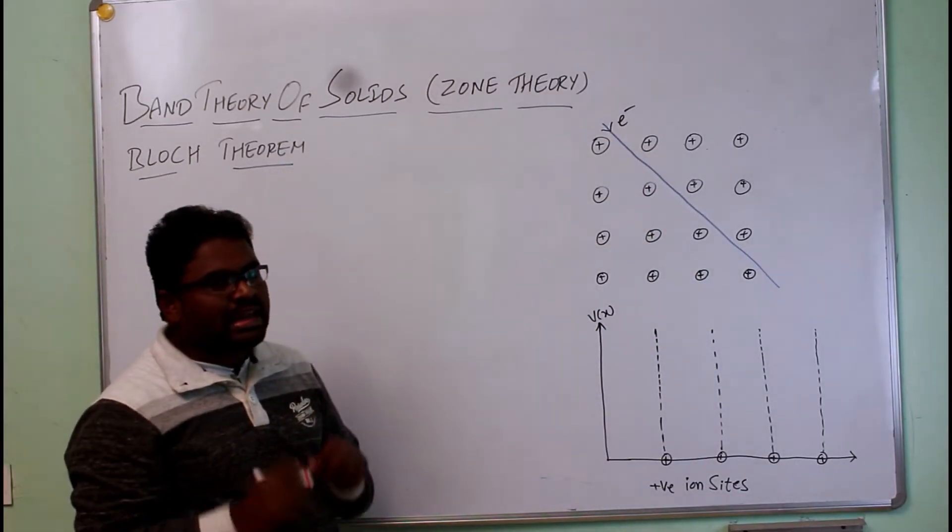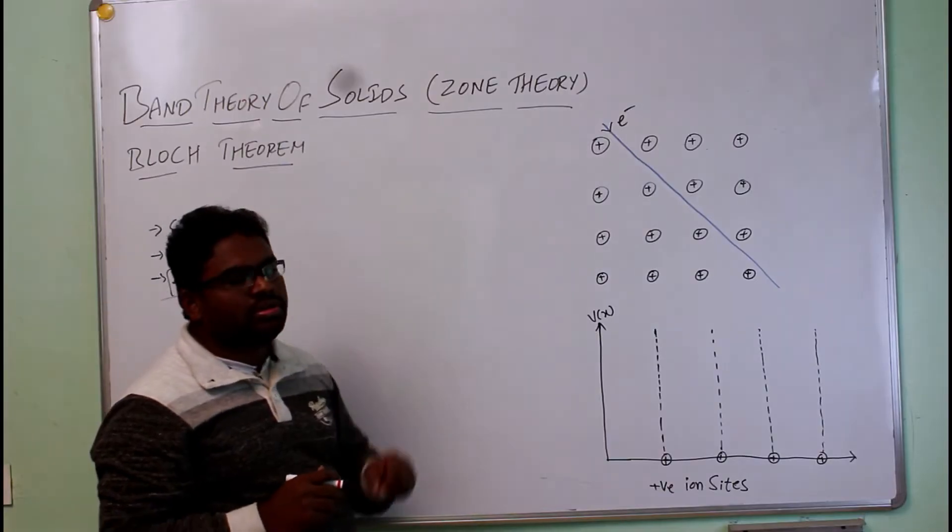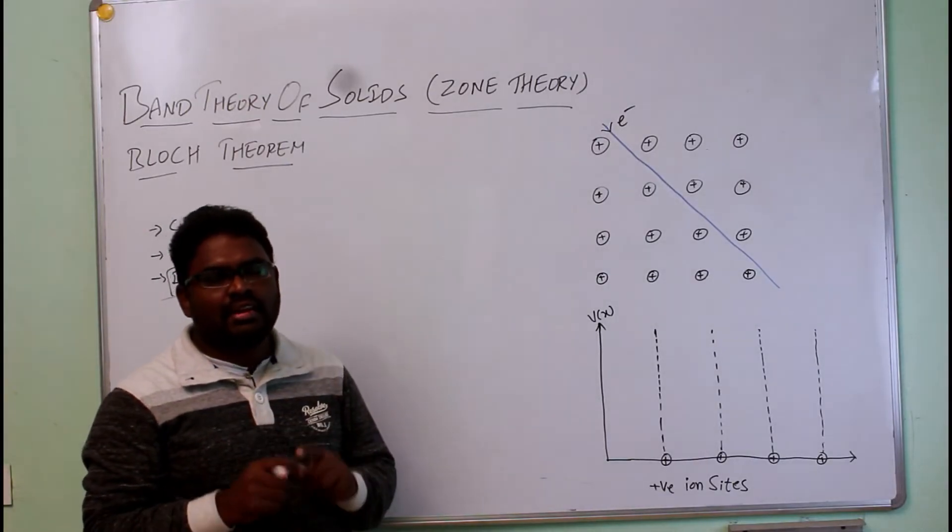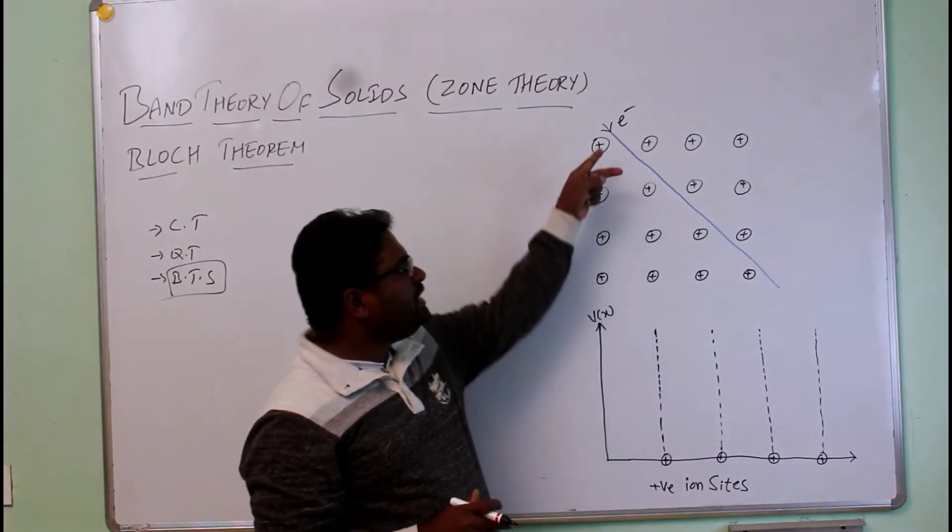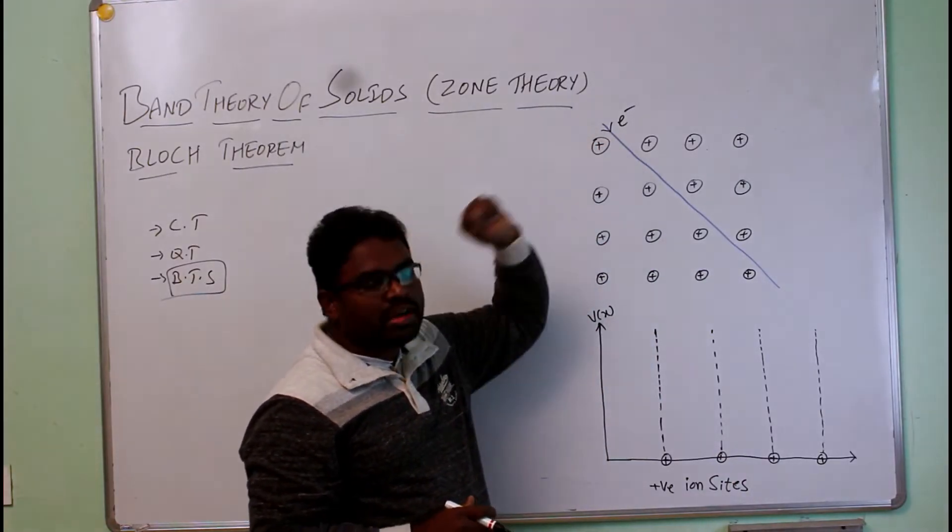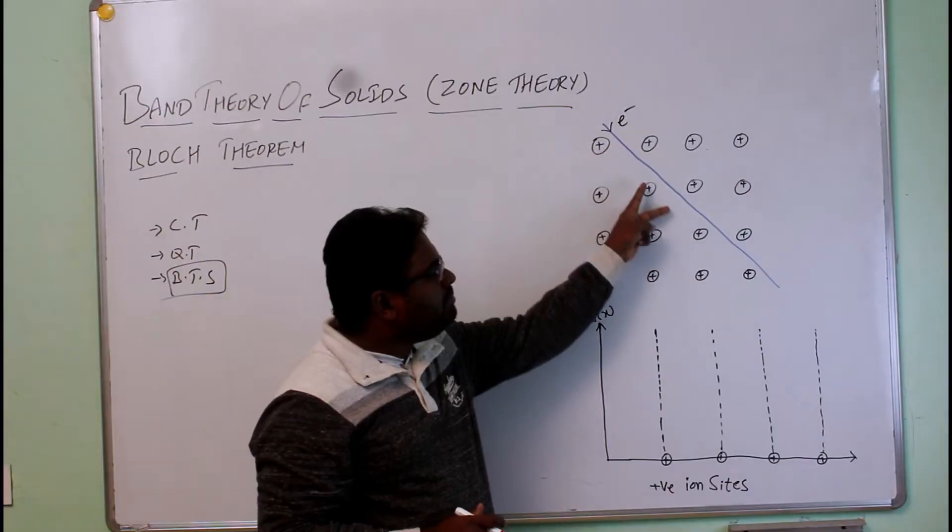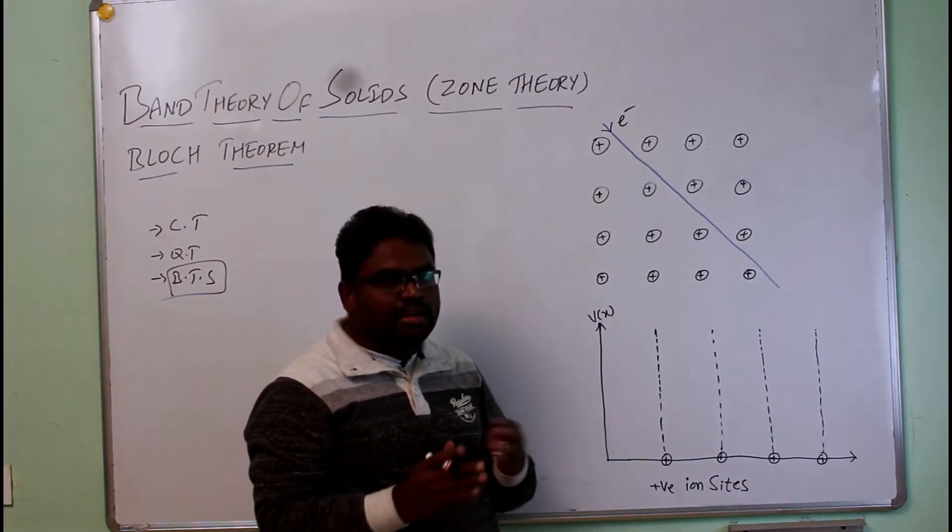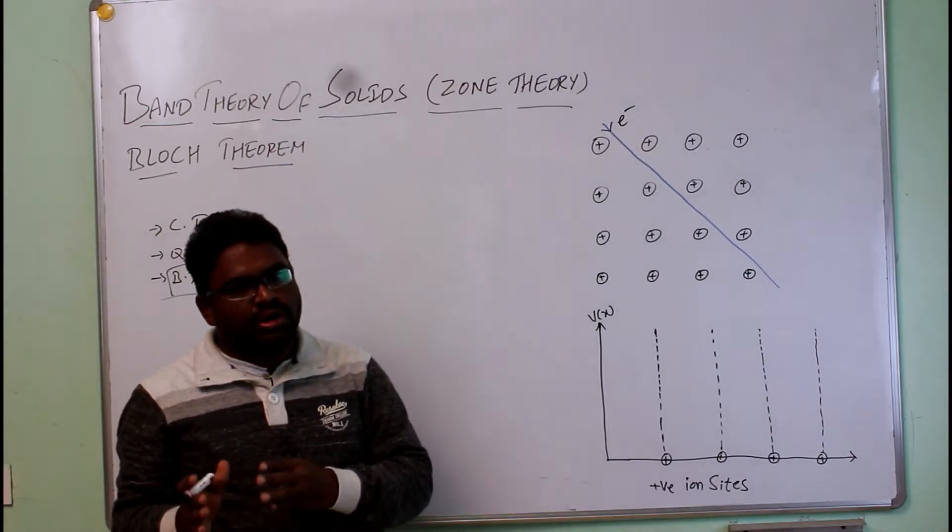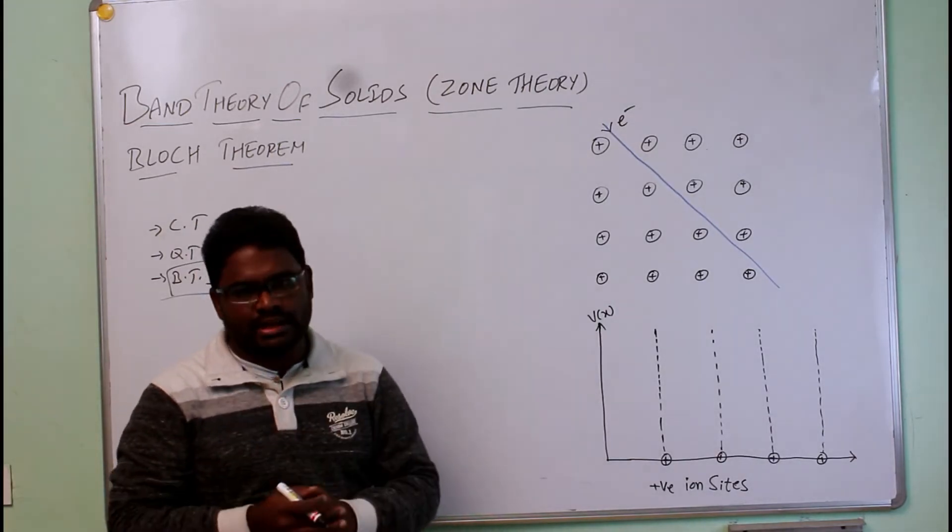At the lattice point, the potential of the lattice is minimum. In between, the potential is maximum. If it is minimum potential, the electron can move freely. In between, the potential is maximum, so the electron cannot move freely. That means the electron possesses both free nature and constrained nature.